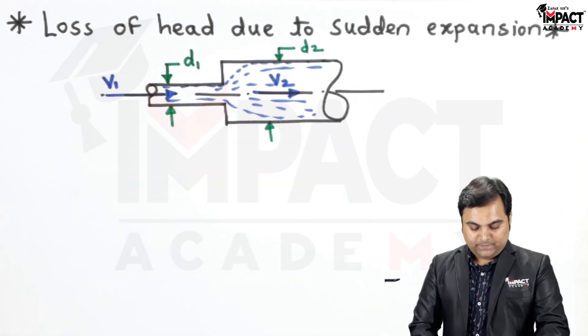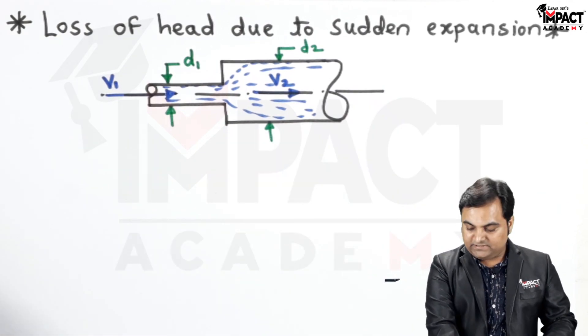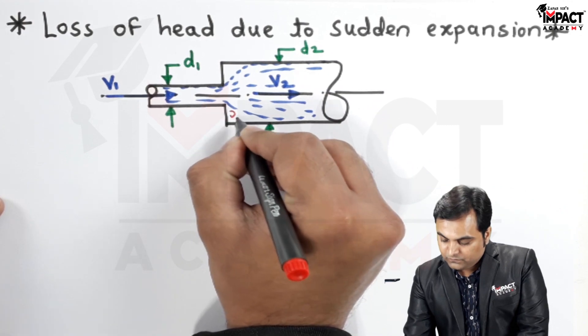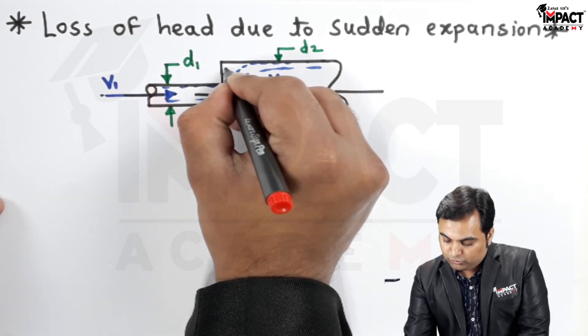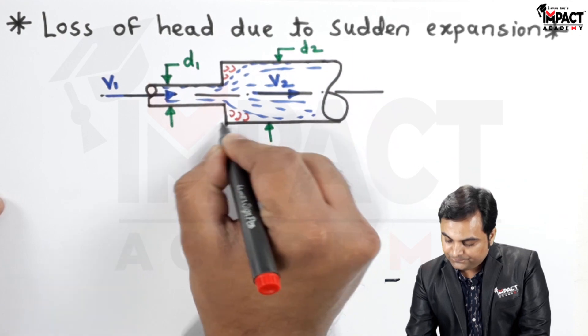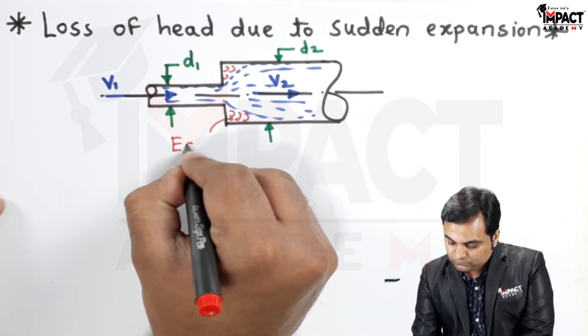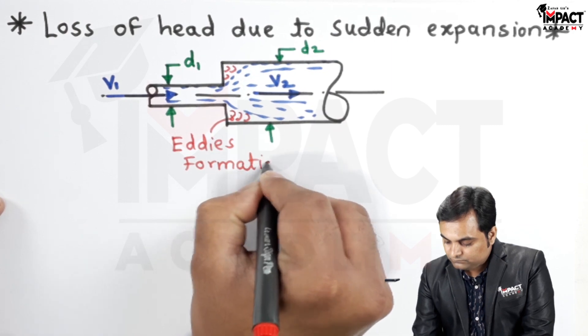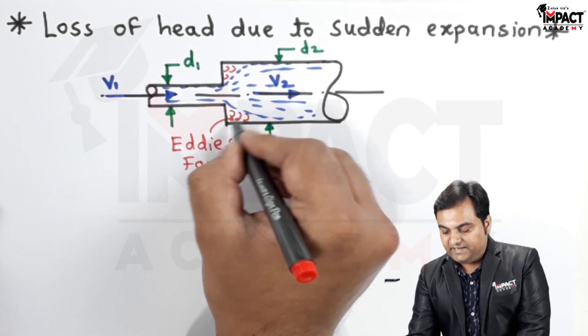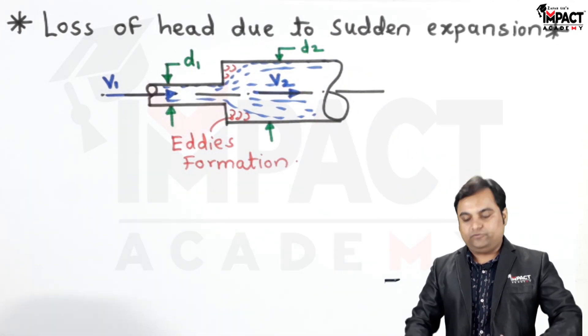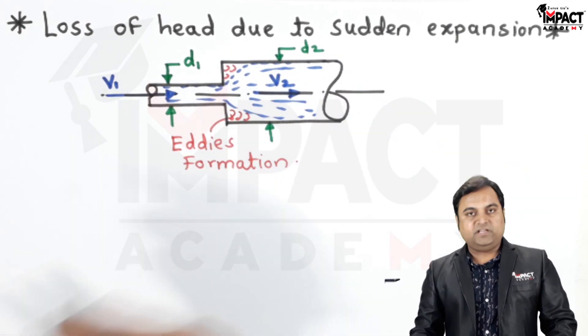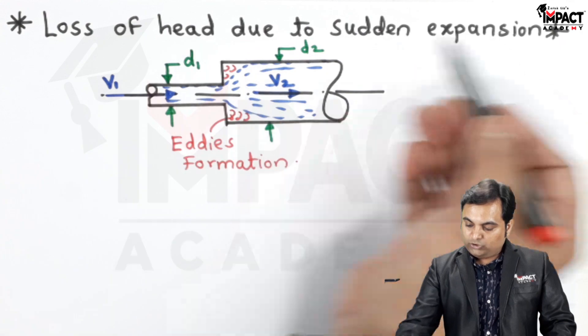As we can see, the fluid has left this boundary. There is separation, also called eddies formation. When these eddies are formed, the liquid is not following the shape of the pipe, so there is a loss which is called the head loss due to sudden expansion.